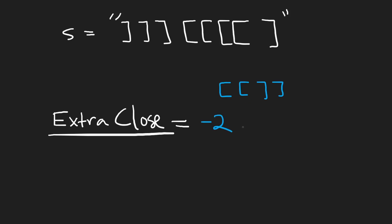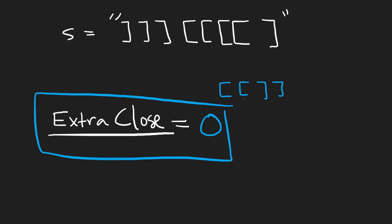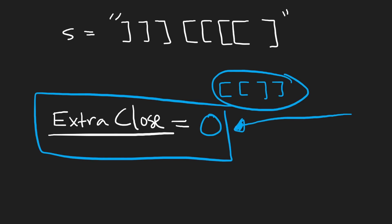Starting at zero: first opening bracket sets it to negative one, second opening bracket to negative two, first closing bracket brings it to negative one, last closing bracket brings it back to zero. At the end we have zero extra closing brackets, meaning it's perfectly balanced. The maximum number of extra closing brackets at any point was zero — it only went negative. Since we never had any extra closing brackets, we don't have to do any swaps. The answer is zero.